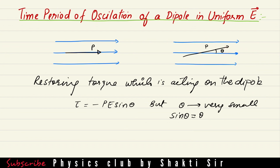The dipole will come back with some small angle theta again and continue back and forth, producing oscillations. We can calculate the time period or frequency of this oscillation. Replacing sin θ with θ, we get torque equal to negative pE θ. Let's call this our first equation.